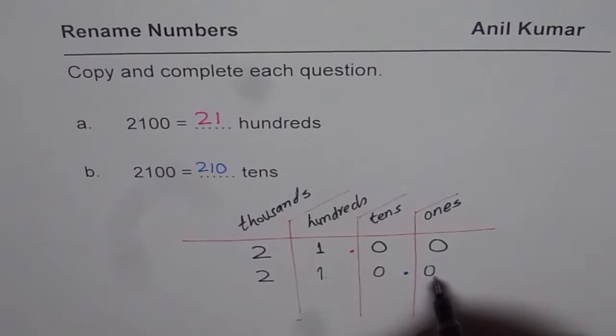Since the number after decimal is zero, we just dropped it. You could have written decimal zero also. I hope that explains how to rename numbers up to thousands as hundreds and tens.